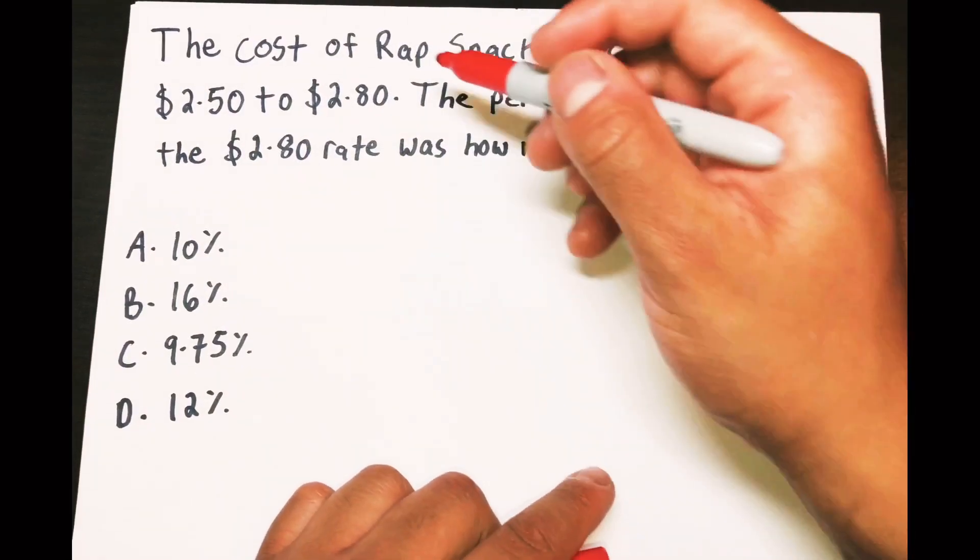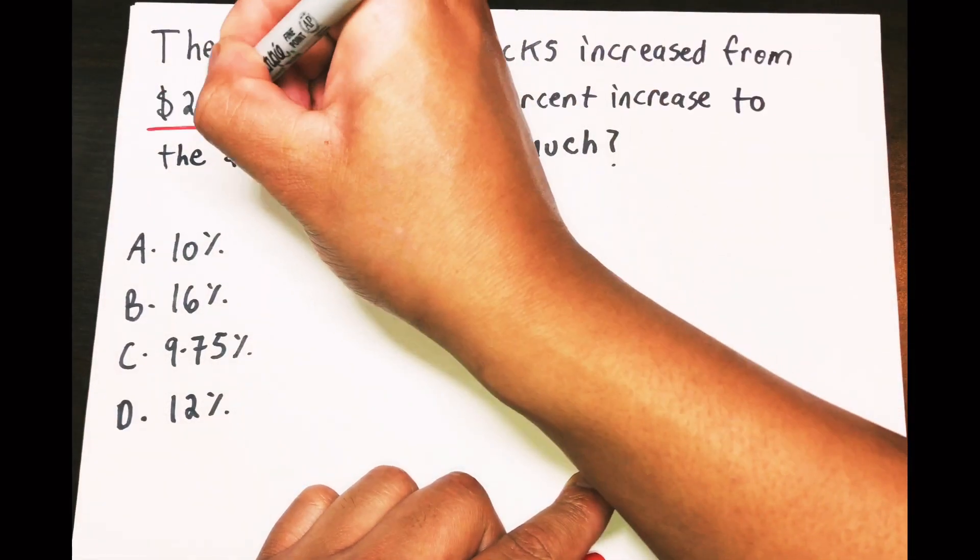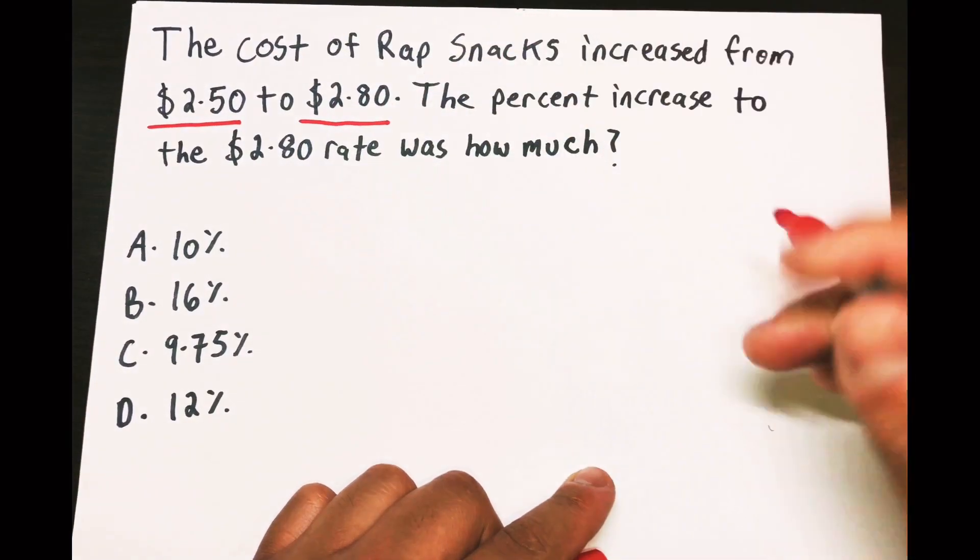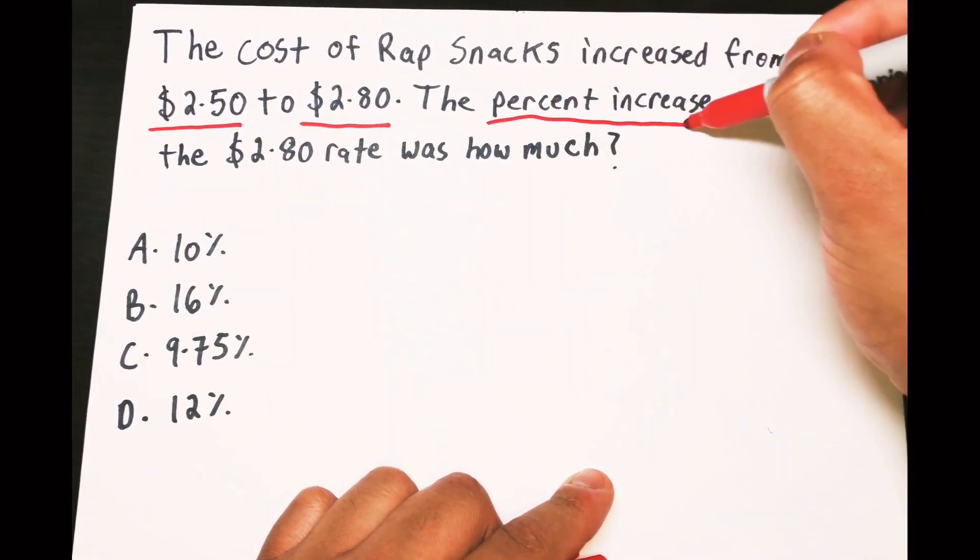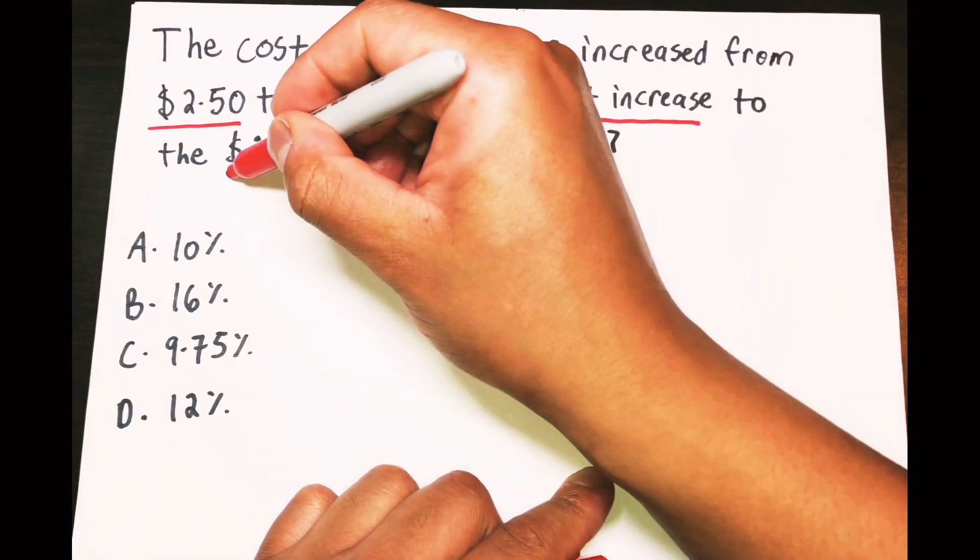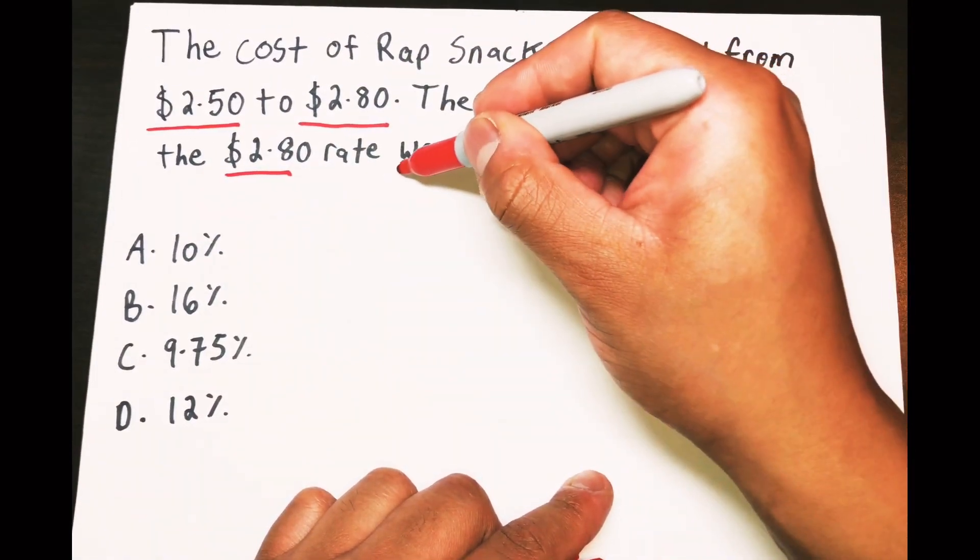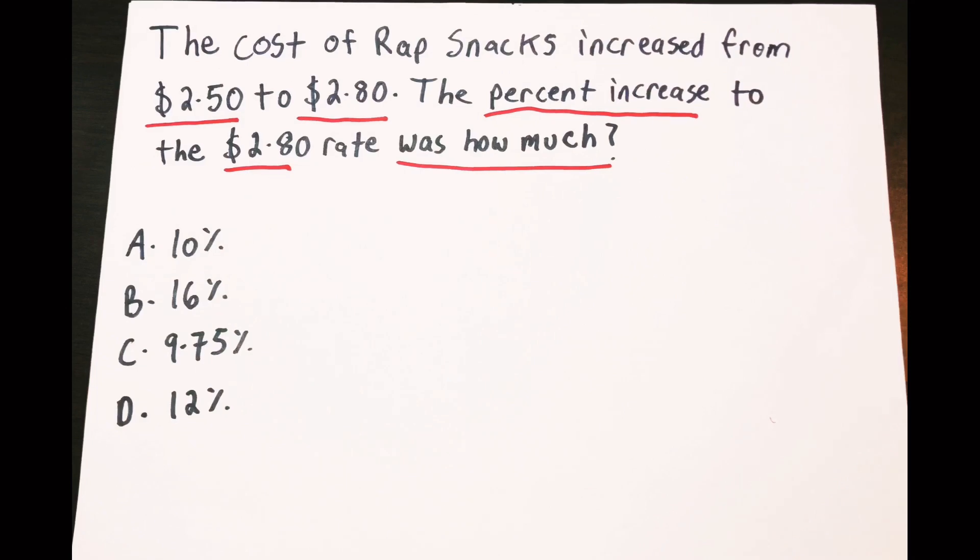So it increased from $2.50 to $2.80. The percent increase, that's what we're looking for to the $2.80, was how much? Alright, so what we want to do is first to find a percent increase from this.